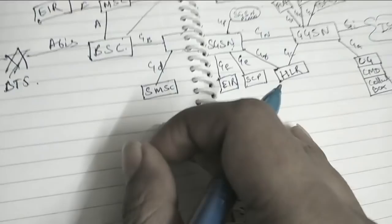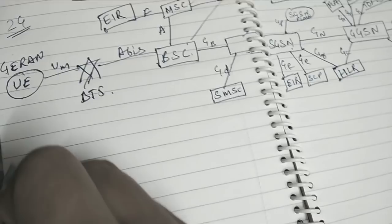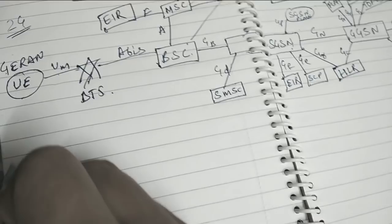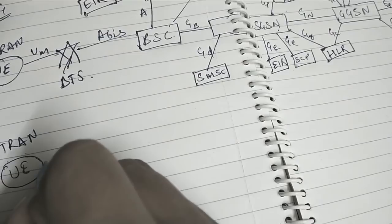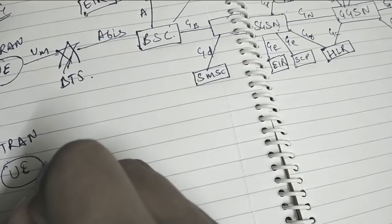Now let's talk about the UTRAN part, that is 3G. UTRAN part, Universal Terrestrial Radio Access Network. Here also we have a UE, User Equipment. UE is connected to the nearest Node B by UM Interface. Same above and here also.